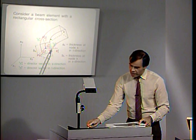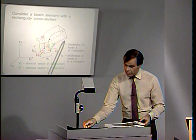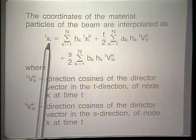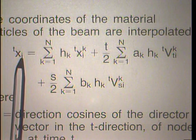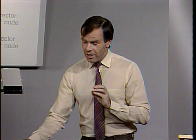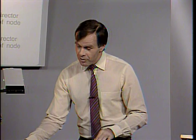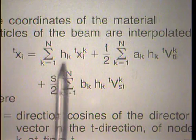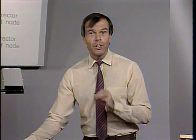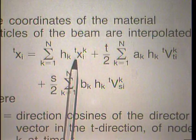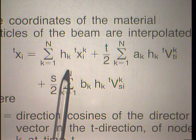These are the variables used to describe the geometry and displacements of the beam element. We start with the general equation for the geometry at time t: txi, the coordinates of a material particle within the element at time t, measured in the stationary coordinate system. These are obtained using hk, the interpolation function corresponding to the r direction running through the nodes along the mid-surface. We sum over all nodal points k from 1 to n, where n can equal 2, 3, or 4.